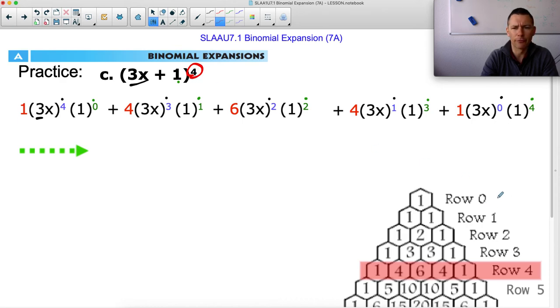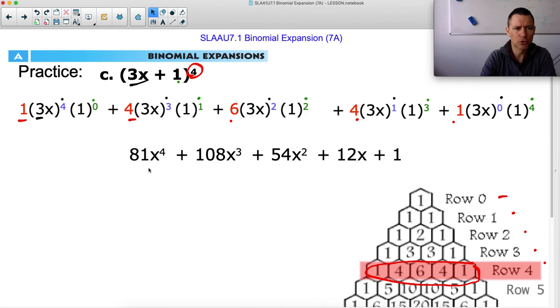And then this is to the fourth power. So it should come from the fourth row, zero, one, two, three, fourth row, one, four, six, four, one. You could also kind of guess because it has one, two, three, four, five terms. So you pick which row has five numbers in it. And when you simplify, 81x squared, blah, blah, blah.